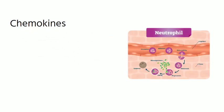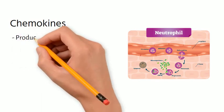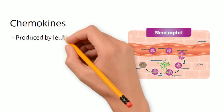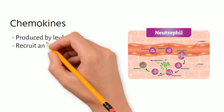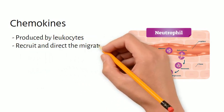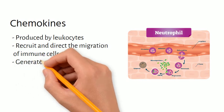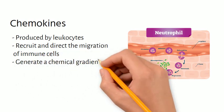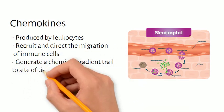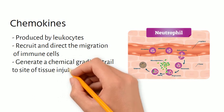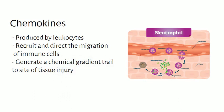Chemokines are critical to the third step in the cellular phase of inflammation. Chemokines are produced by leukocytes and recruit and direct the migration of immune cells to the site of tissue injury by generating a chemical gradient trail. Chemokines work a bit like a breadcrumb trail that helps you find your way if you were to get lost.